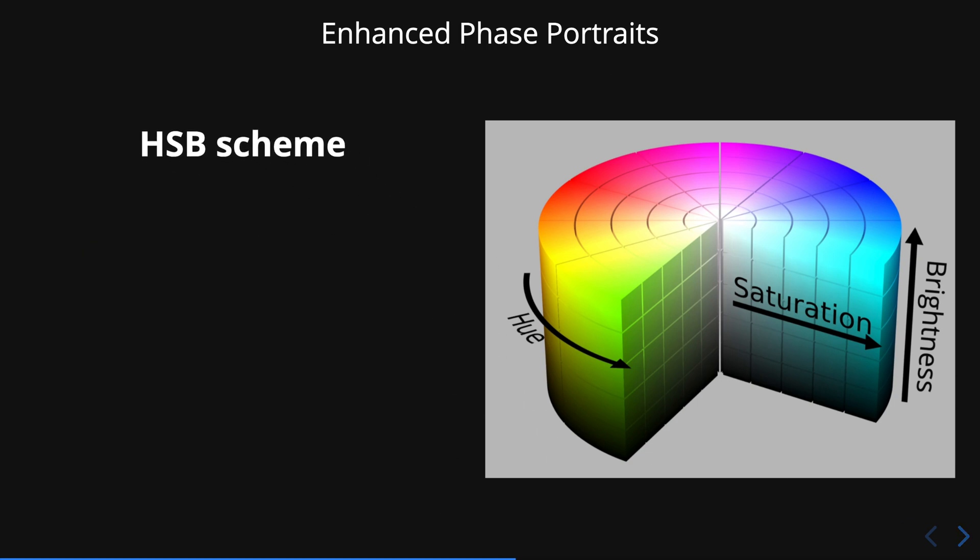Here the HSB scheme stands for hue, saturation and brightness. For the phase portraits that I showed you at the beginning, I considered the hue to be equal to the phase and the values of the saturation and brightness were both equal to 1. To obtain an enhanced phase portrait, we can modify either the saturation or brightness.